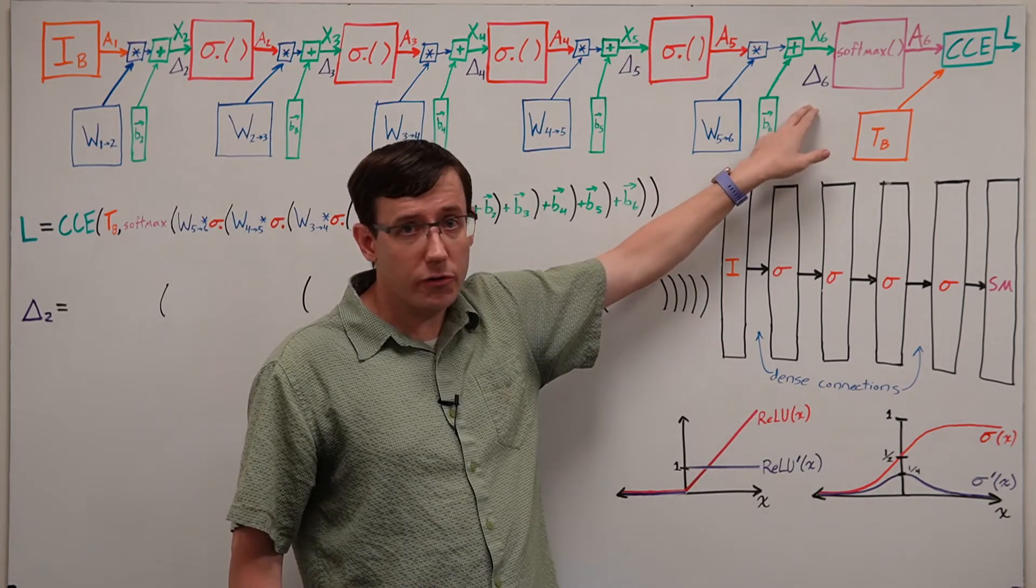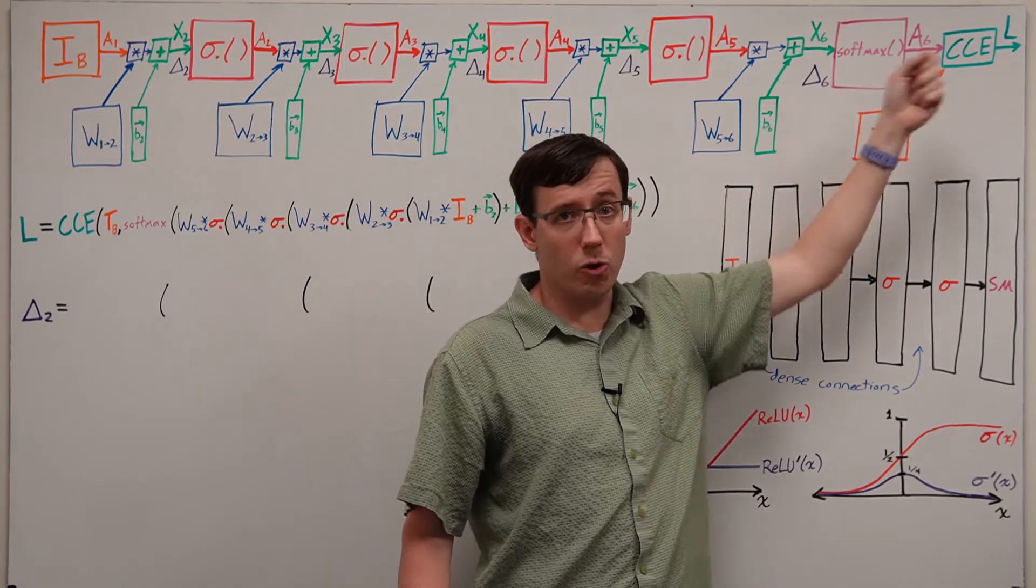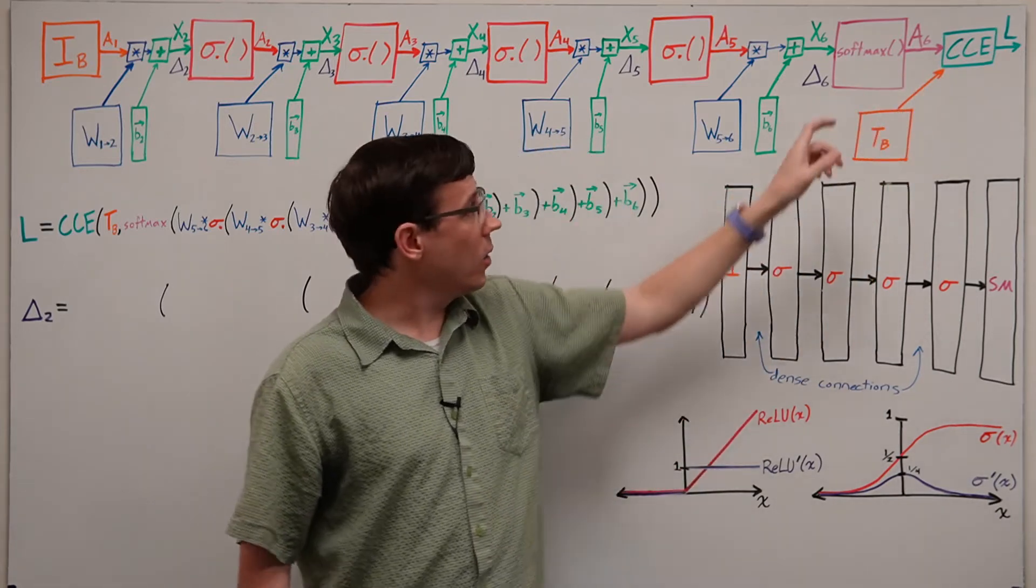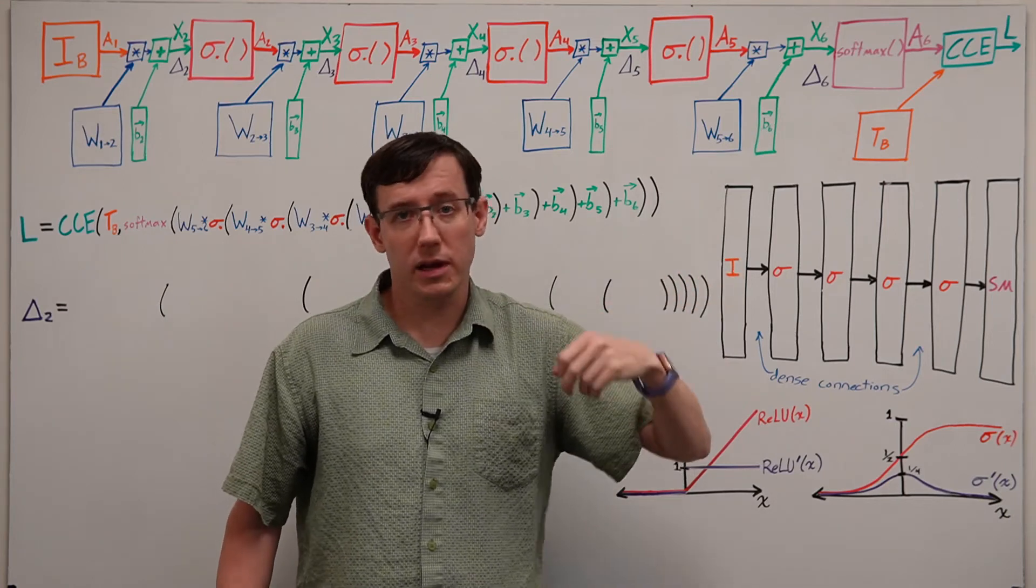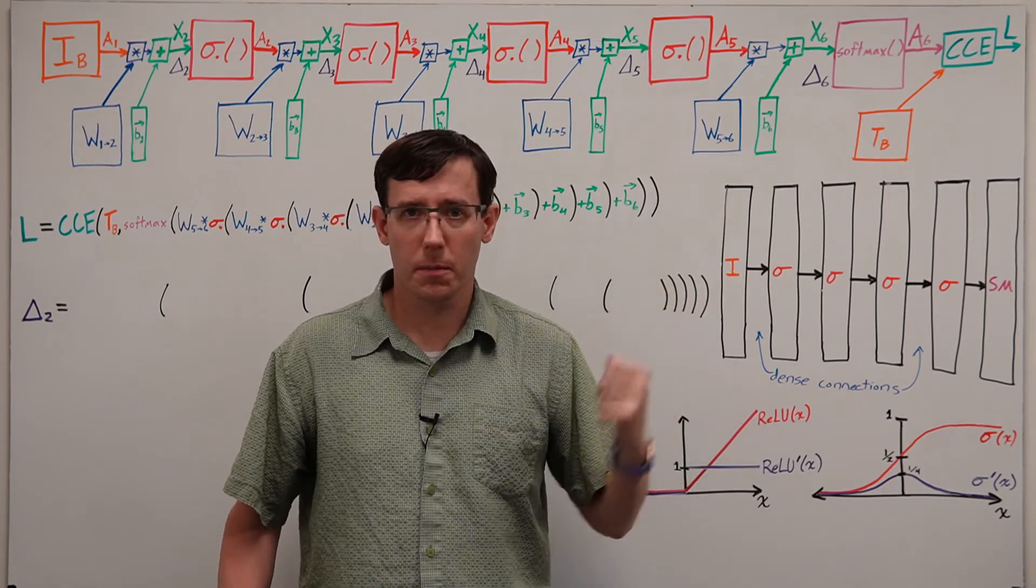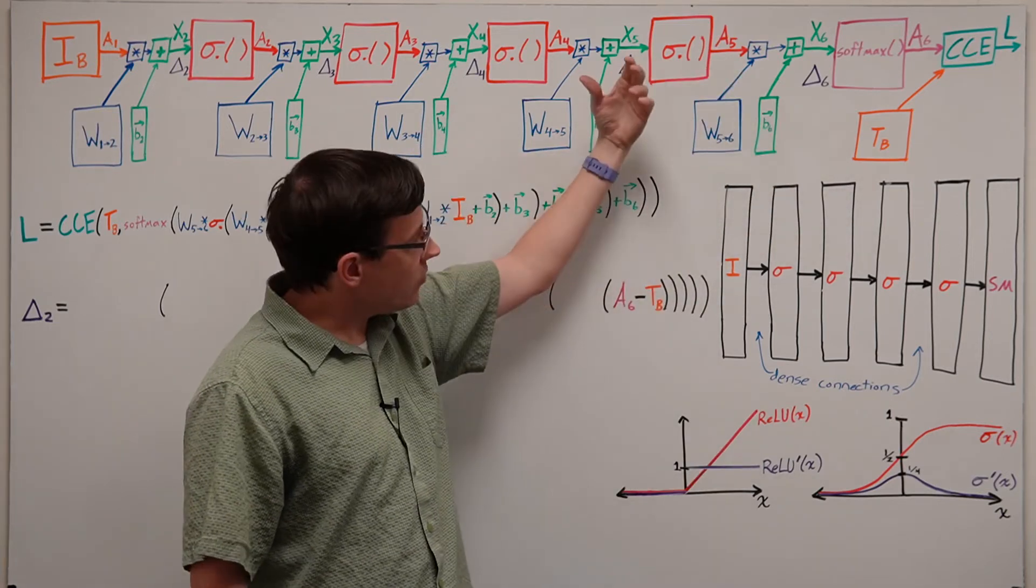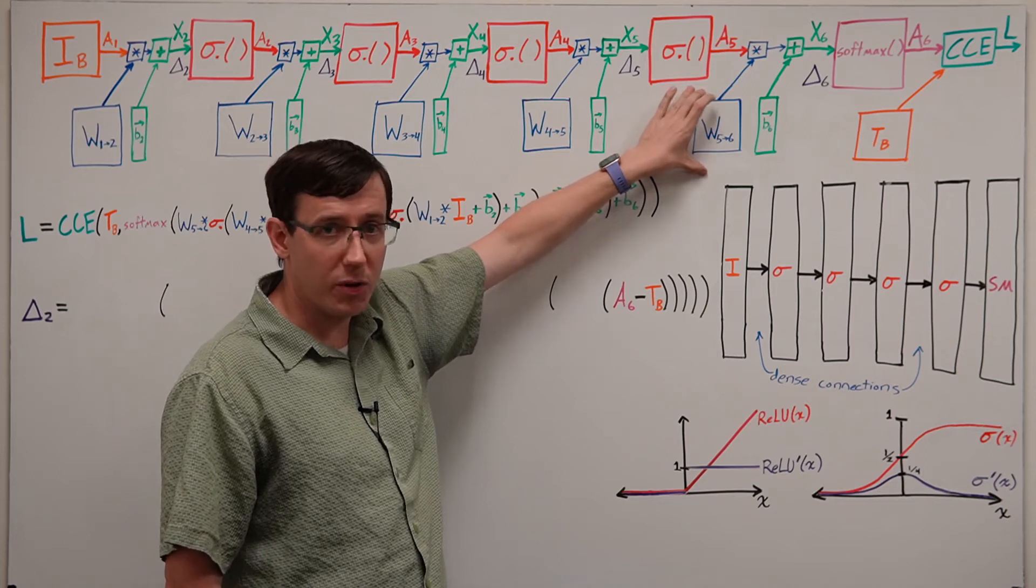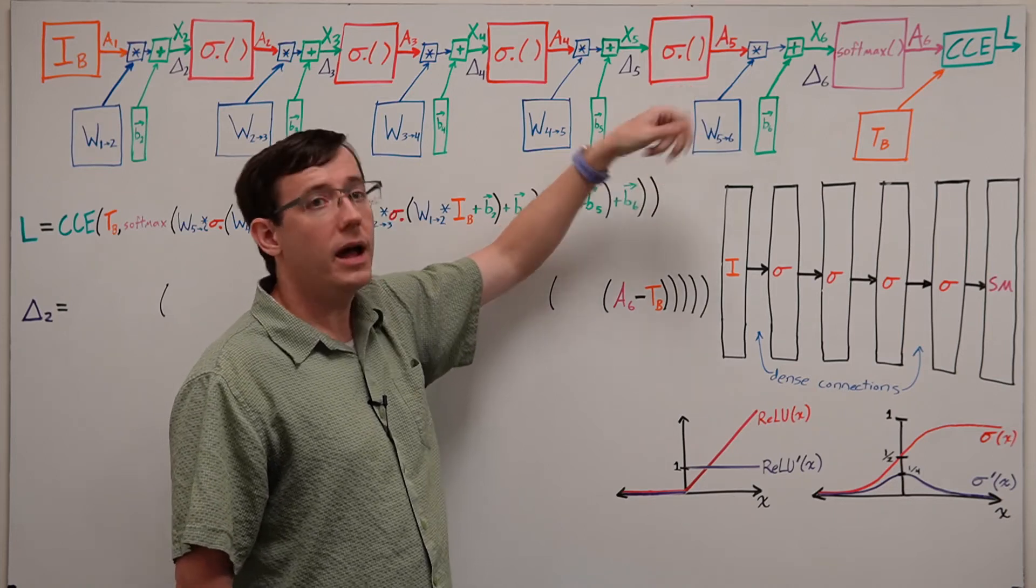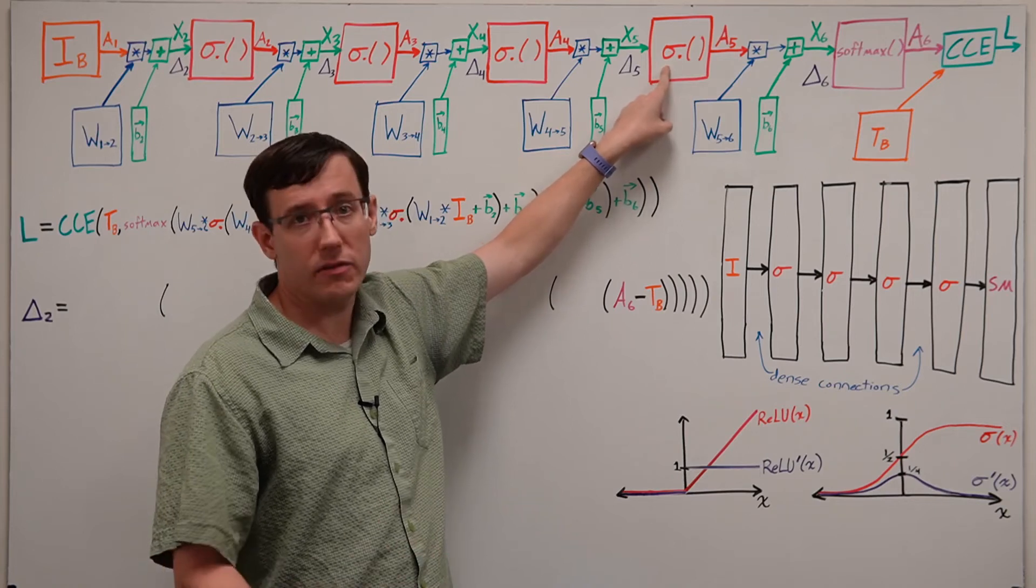Our delta calculations start from the output layer, and since we're using softmax with categorical cross-entropy, our output layer deltas are just the difference between activations and targets. To propagate deltas backwards, at each hidden layer, we need to do a matrix multiplication with the transpose of the weight matrix, and then an element-wise multiplication with the derivative of the activation function.